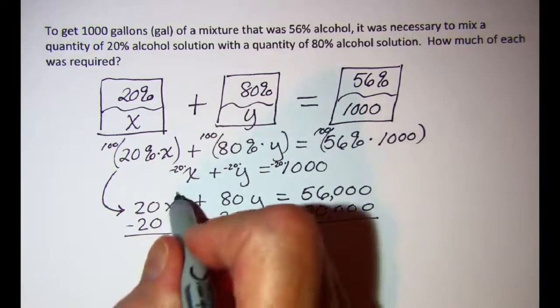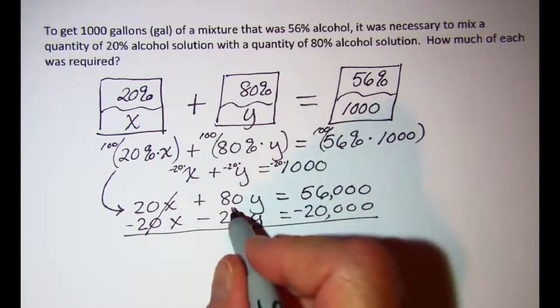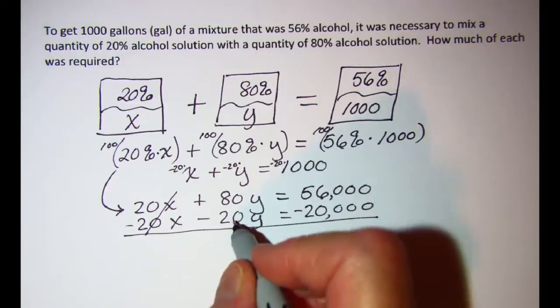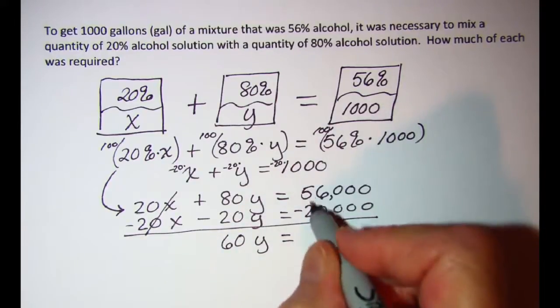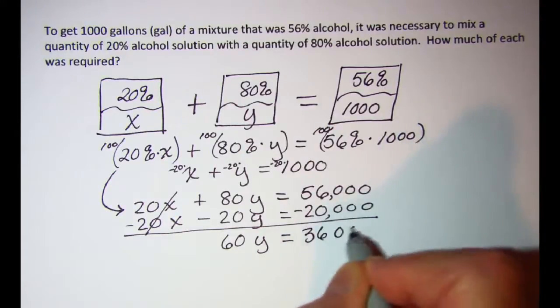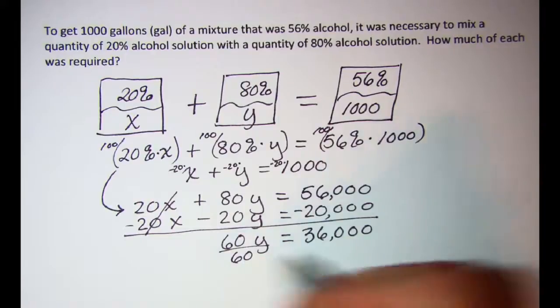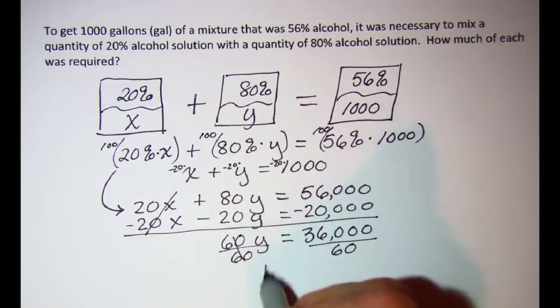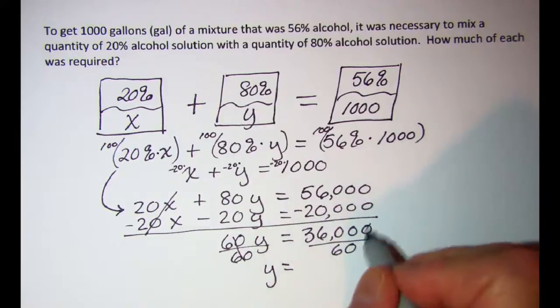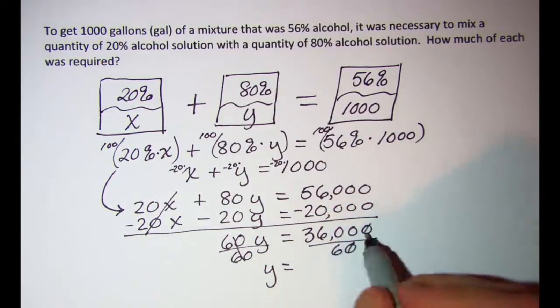Adding these, they go away. I have 60y equals 36,000. Divide both sides by 60 and I have y is equal to 600.